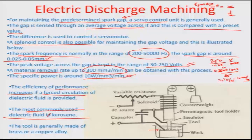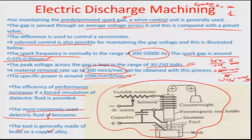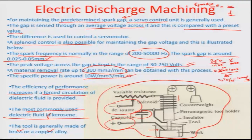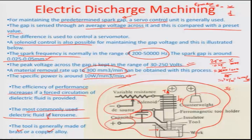The most commonly used dielectric fluid is kerosene, and the most commonly used tool materials are brass and copper alloys. A schematic shows how a servo or solenoid controls the inter-electrode gap. There is a gap voltage-sensing capacitor, and a solenoid controls the gap through a relative difference between a reference voltage and the gap voltage via a variable resistor. To control upward motion of the tool if it has overdone the preset value, a counterweight can be used to pull it back. The solenoid force and the tension force act in opposite directions, and at equilibrium they are equal.